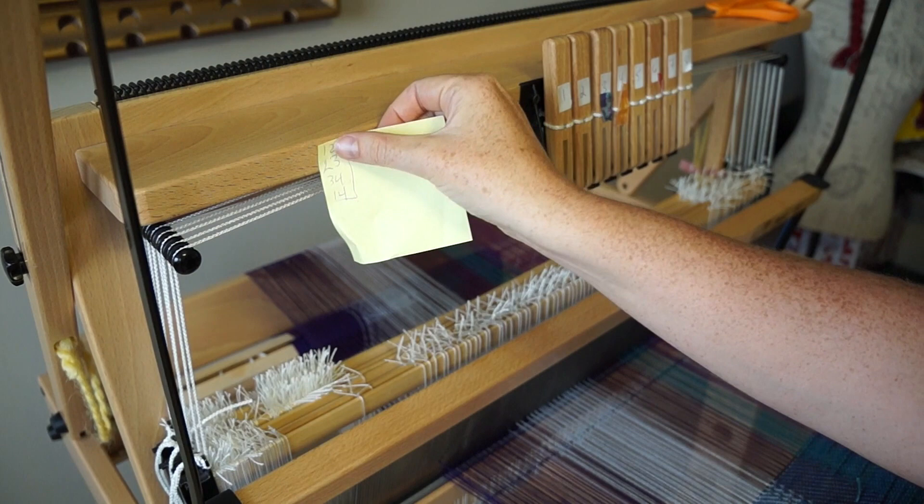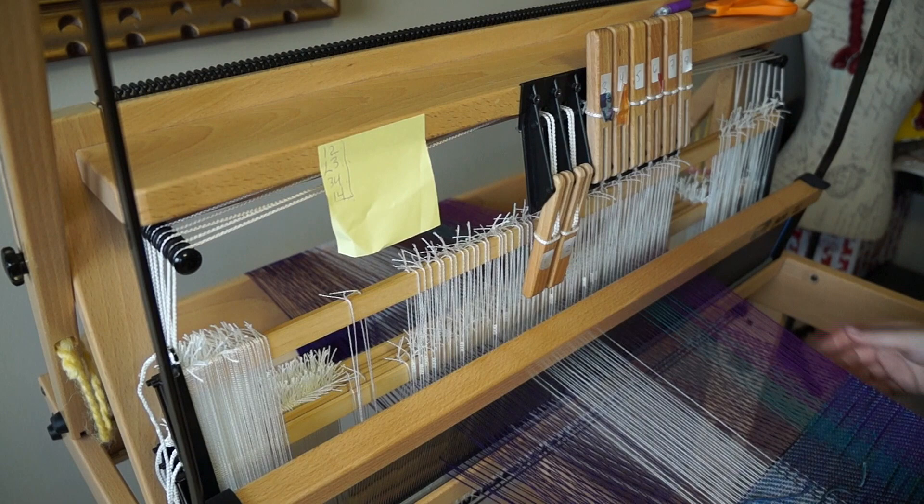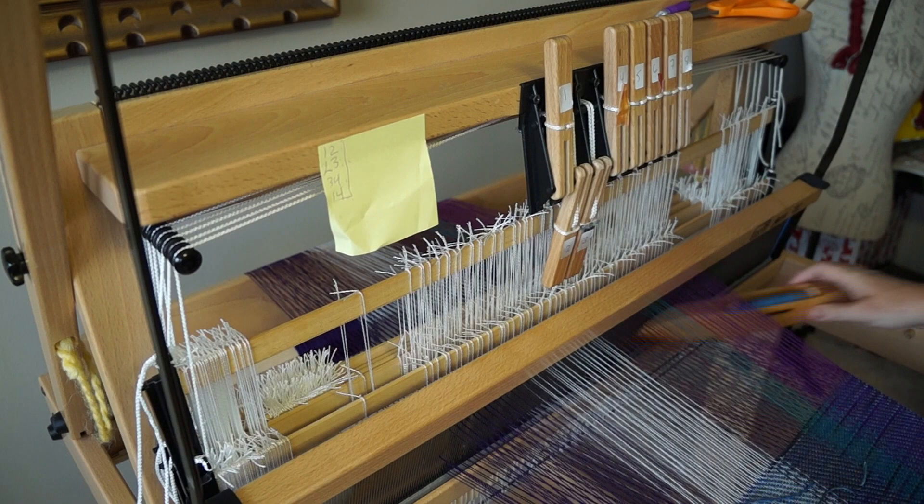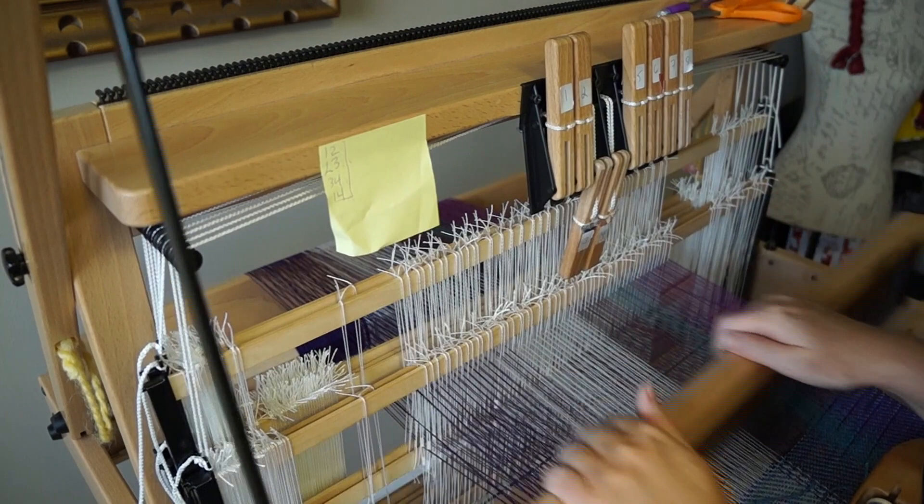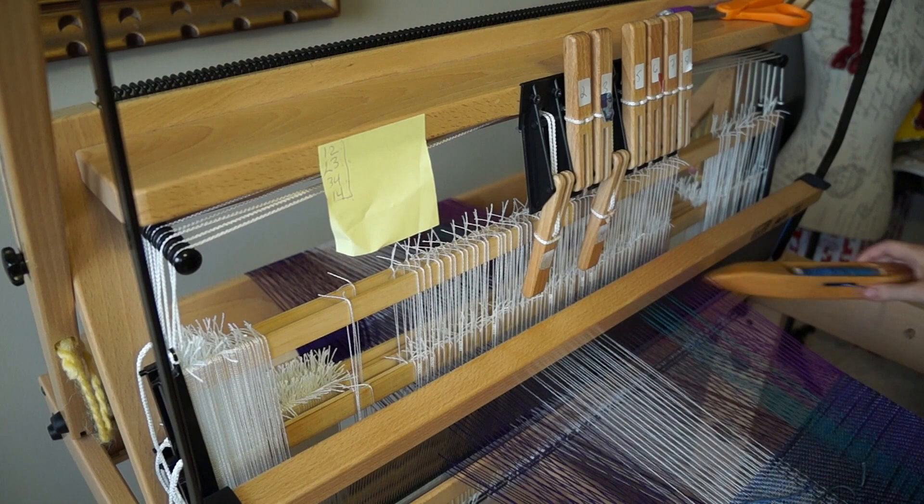So I take my post-it note and I stick it up here so that it's right in front of me and I know what I'm doing. And then essentially, very easy, I'm going to start with the first one. I'm going to flip these two. I'm going to run my shuttle through. Then I'm going to go to the next one, which is two, three. I'm going to beat. Shuttle. And we're going to go to the next one, three, four. And then one, four. And that's it.